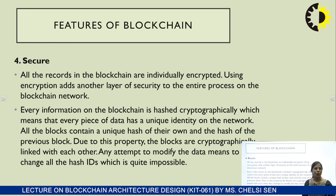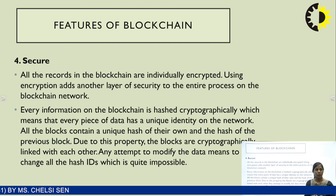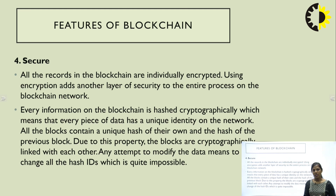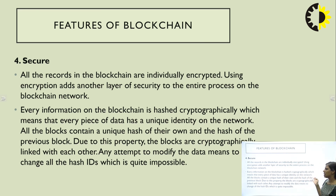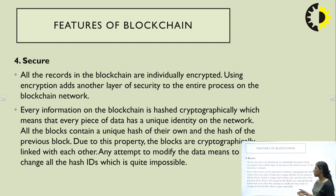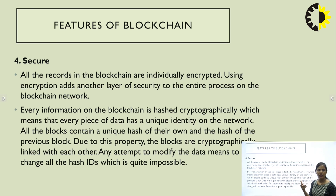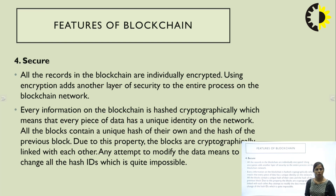The security feature: all records stored in the blockchain are encrypted using a cryptographic process such as hashing. Every piece of data has a unique identity on the network — no one can change the data without that unique identity. All blocks contain the unique hash value of their own and the hash value of the previous block, maintaining connectivity. Any attempt to modify data changes the whole hash ID, which is quite impossible.